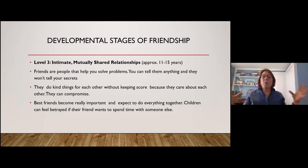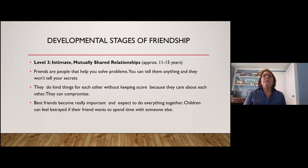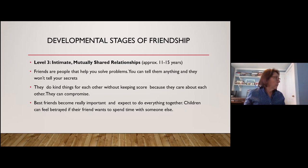The next stage offers a much broader view. There's a sense of mutuality that's less rigid and less transactional — friendship goes beyond transactions. Friends are people who help you solve problems, you can tell them anything, they won't tell your secrets, they do nice things without keeping score, and they can compromise. Having a best friend is really important, and that best friend is expected to do everything together with you. If your friend wants to spend time with someone else, that feels like betrayal — this is the middle school dynamic.